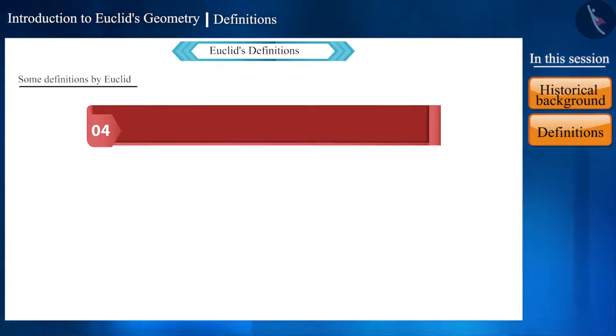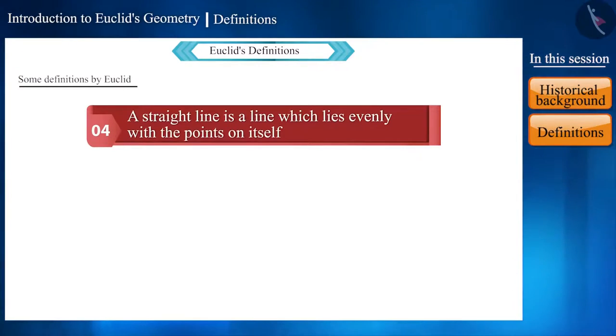This is the fourth definition. Line which lies evenly with the points on itself. That is, we can say that on joining many points, a line is formed.